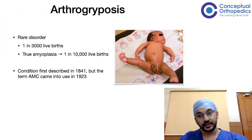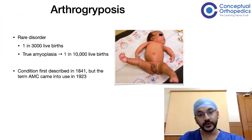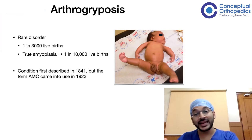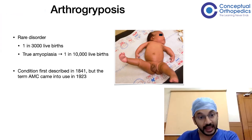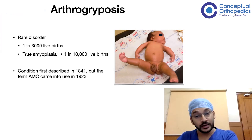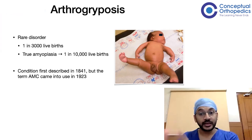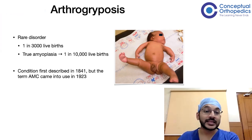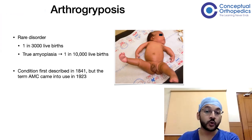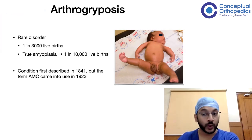The condition arthrogryposis was first described in 1841. However, the term arthrogryposis multiplex congenita only came into use in 1923.